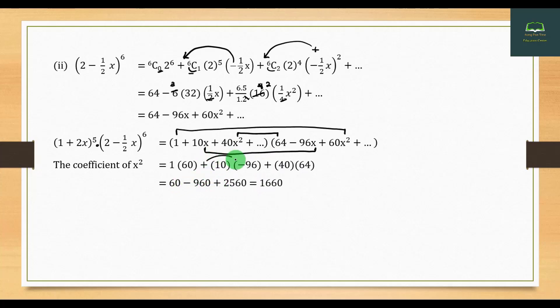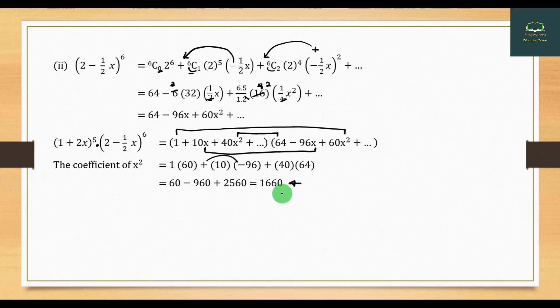X squared is equal to 60, plus 0. X squared is equal to 960. X squared is equal to 1060. X squared is equal to zero.